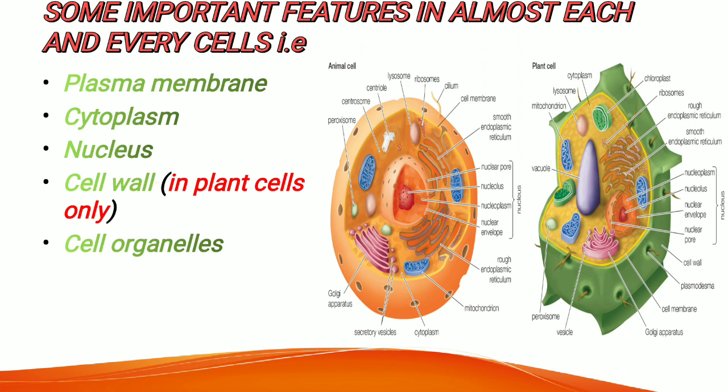The cell wall is present mostly in plant cells. It is a layer found outside specific cells like plant cells, and it is tough, flexible, and sometimes rigid. It is made up of cellulose.